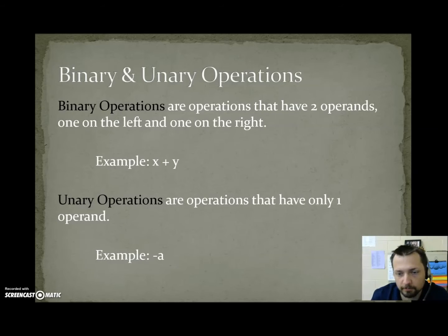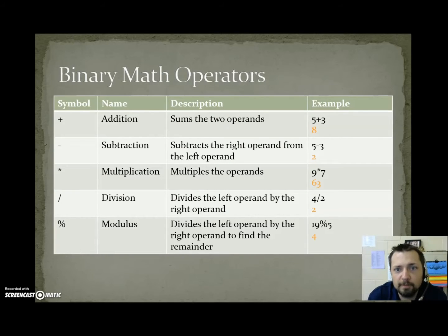Binary math operators. We're going to run through these pretty quickly. You should understand most of them already for math, but modulus is a little unique. Plus is addition, sums the two operands. 5 plus 3 makes 8. Minus is subtraction, it subtracts the right operand from the left operand. 5 minus 3 is 2. Asterisk is used for multiplication, it multiplies the operands. 9 times 7 is 63. The forward slash is for division, it divides the left operand by the right operand. 4 divided by 2 would be 2.